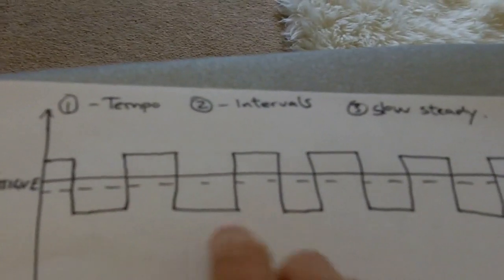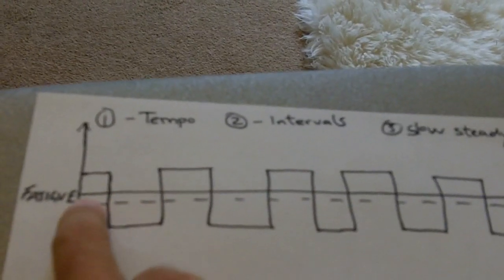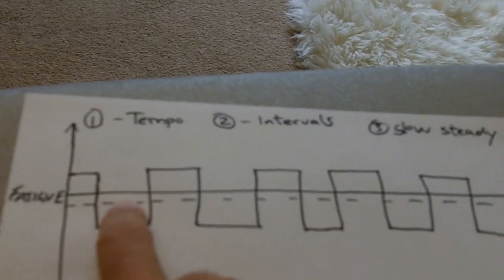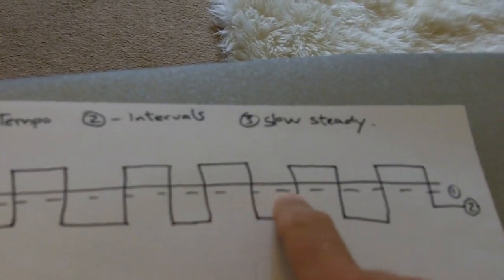The other session we do is called a tempo run. Okay, this is a continuous run, but we try and do it just below our point of fatigue. So it is getting out of your comfort zone, there's no denying that, but it breeds really good results.